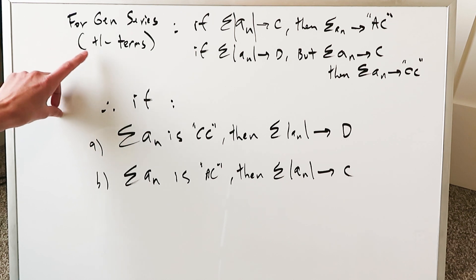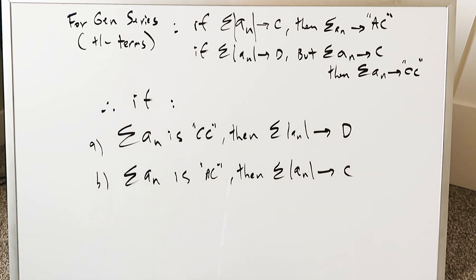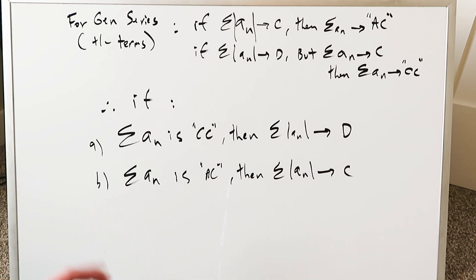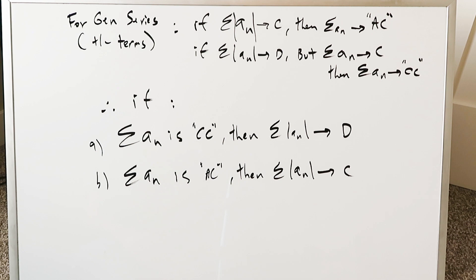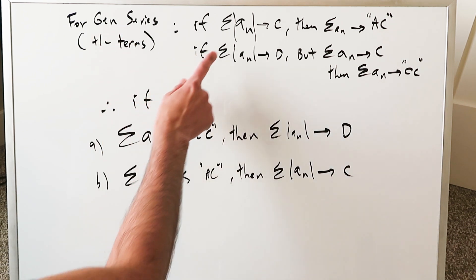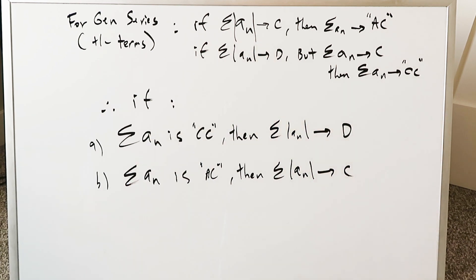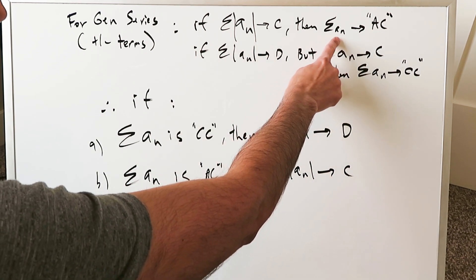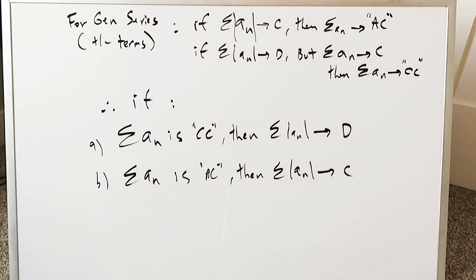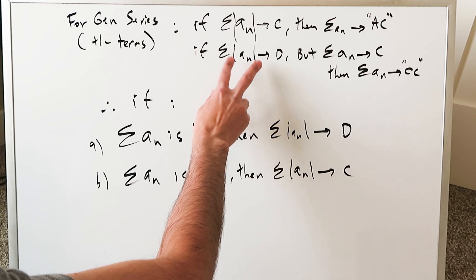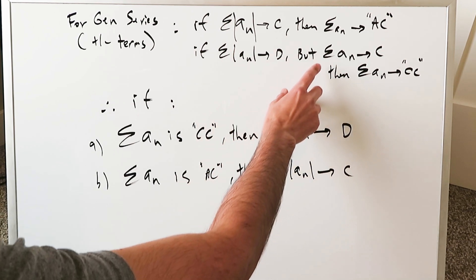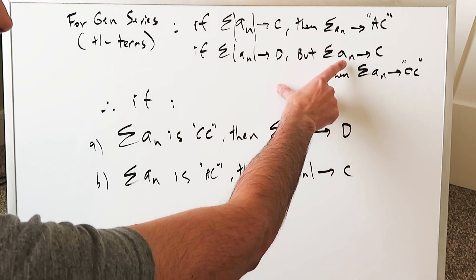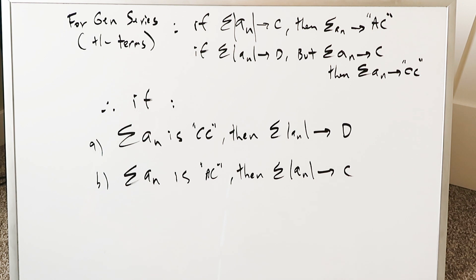Consider here a general series in which you can see positive or negative terms — the key word being general series. We're not talking about geometric series, because you have a very good test with regards to the common ratio: ratio less than one gives a finite sum and convergence; ratio larger than one gives divergence. But for a general series, if the sum of the absolute value terms is convergent, then without the absolute value, a similar series will be absolutely convergent. If an absolute value series is divergent, then possibly the non-absolute value version is convergent — and that series would be conditionally convergent.